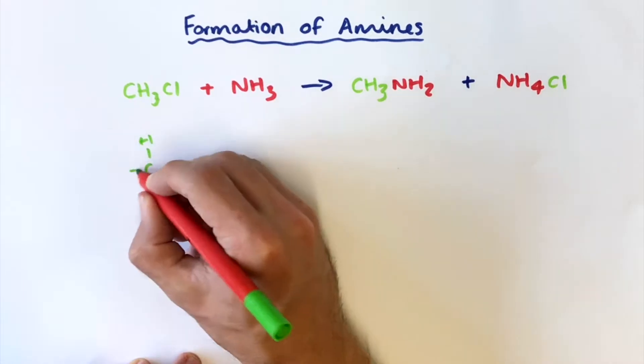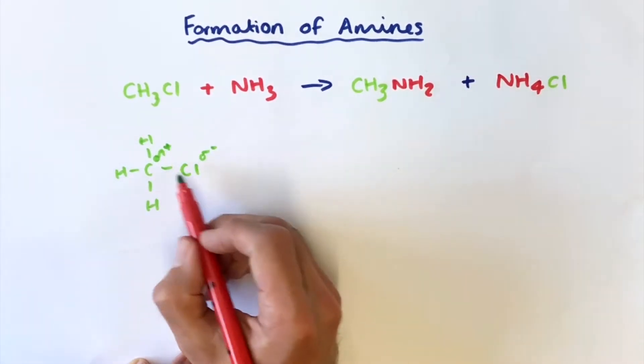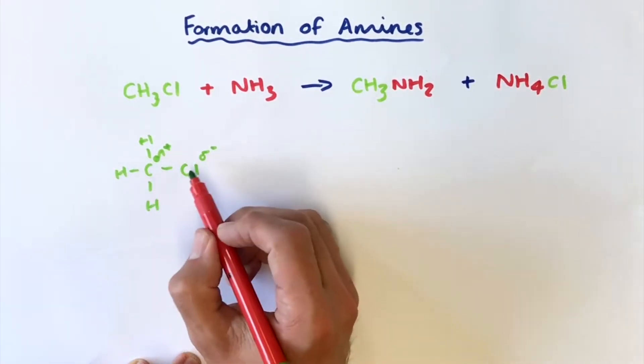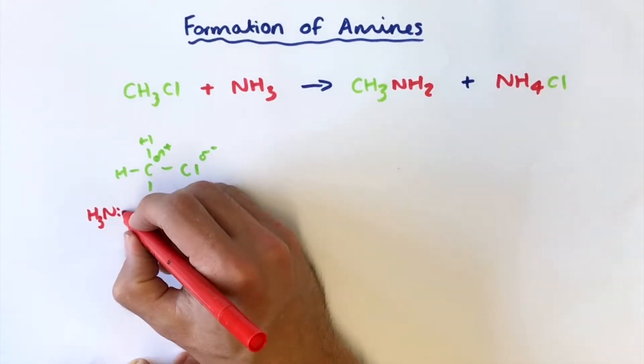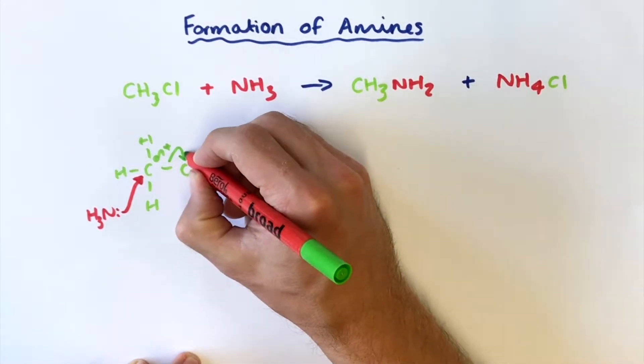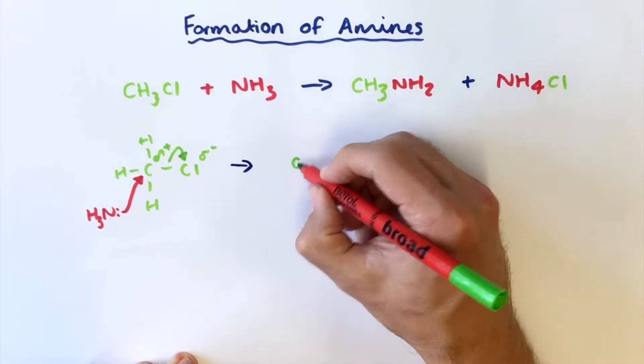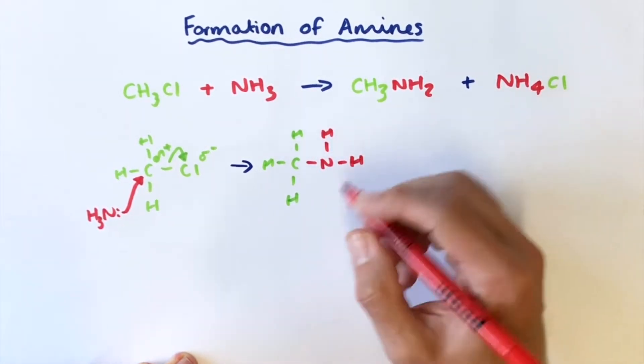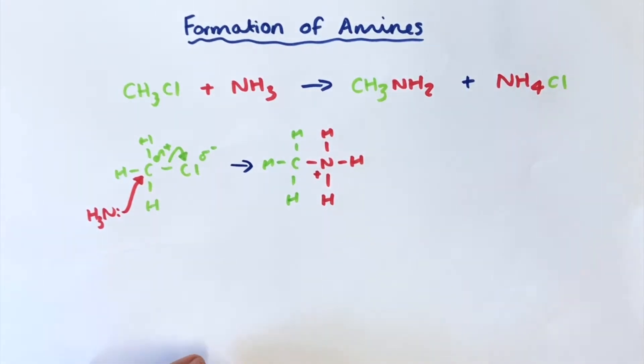So first of all if we start off with our chloromethane we can see that there is a polarity here because we've got a difference in electronegativity. So carbon is less electronegative than chlorine. Electrons are drawn towards the chlorine and we will have a slightly polar bond here. The ammonia has a lone pair of electrons on it so it's going to act as a nucleophile in this reaction. Donates a pair of electrons to the carbon. A pair of electrons in the bond are repelled away towards the chlorine. We'll then have an intermediate made up of this so the ammonia has substituted on and we have a slight positive charge here on the nitrogen because we've got this extra proton here.